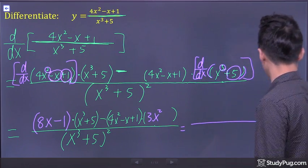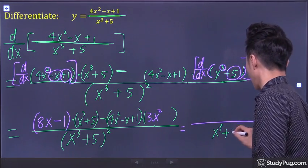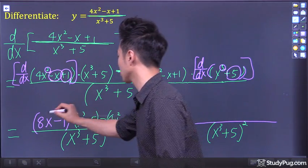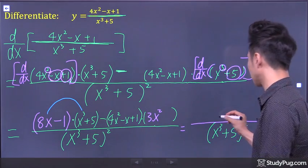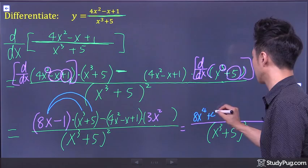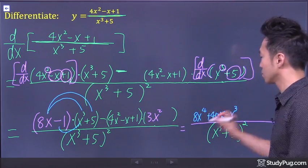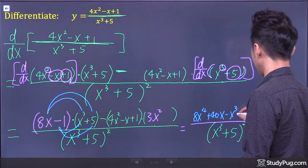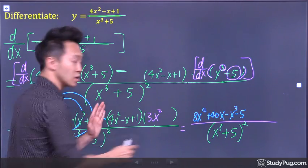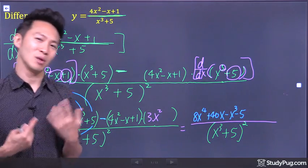Now we just have to clean things up a little. On the bottom we still have x cubed plus 5, whole thing squared. Up top, let's expand everything — we do the FOIL. 8x times x cubed gives 8x to the power of 4. 8x times 5 gives 40x. Negative 1 times x cubed gives negative x cubed. Negative 1 times positive 5 gives negative 5.